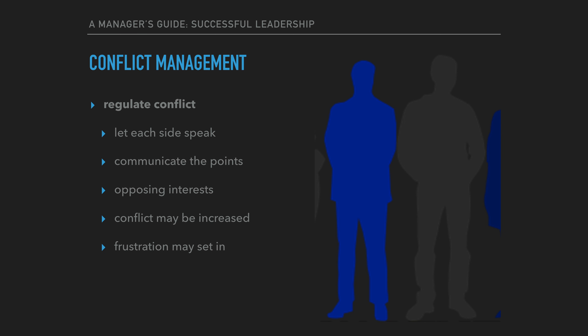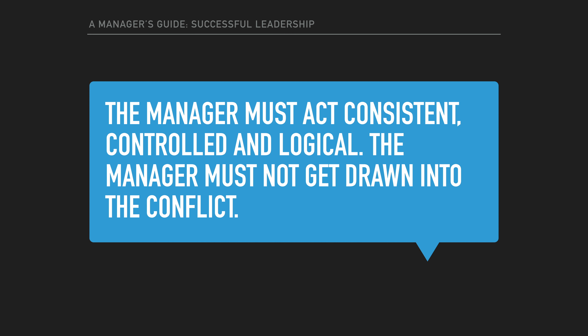Unfortunately, this process would work if people did not have opposing interests or emotionality, but this is simply not the case. The leader needs to do more than this. Conflict may even be increased after each side has explained their issues, as frustration may set in and people may start to react uncontrollably. The manager needs to control the potentially escalating situation by acting in an opposite manner to how the two sides are acting.